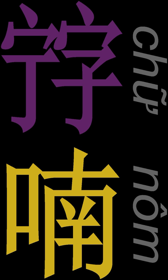The new script was mostly used to record folk songs and for other popular literature. Vietnamese written in Chữ Nôm briefly replaced Chinese for official purposes under the Hồ dynasty and under the Tây Sơn, but in both cases this was swiftly reversed.